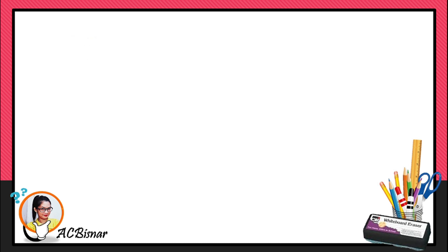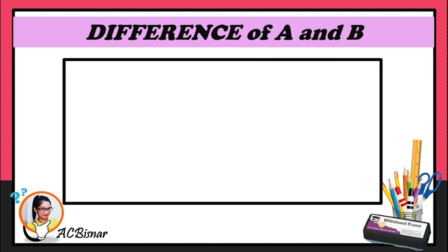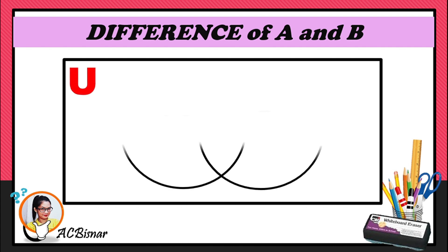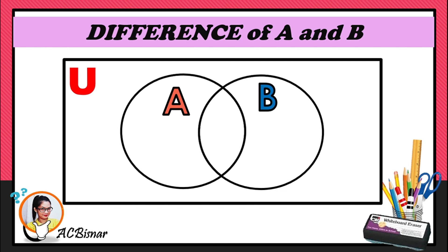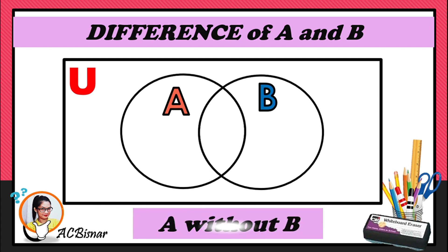The last operation is the difference of sets. Draw a rectangle for the universal set and two circles for A and B. To get the difference A minus B, remember these are the elements in A only, without the elements in B. The shaded portion covering only set A will be your answer.